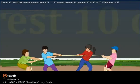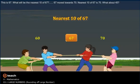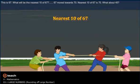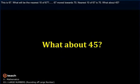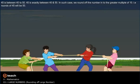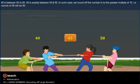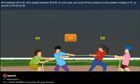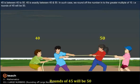Now, this is sixty-seven. What will be the nearest ten of sixty-seven? Sixty-seven moved towards seventy. The nearest ten of sixty-seven is seventy. Forty-five is exactly between forty and fifty. In such a case, we round off the number to the greater multiple of ten. That is, the rounded value of forty-five will be fifty.